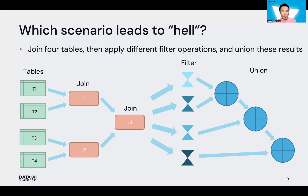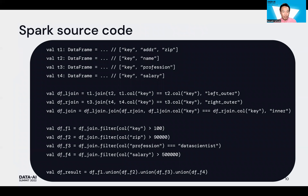We can see only three join operations in the left-hand side. Here is the Spark source code written in Scala. The first four lines read databases into data frames T1, T2, T3, T4. The next three lines perform the three join operations. The next four lines apply defined filter operations against the same join result DF join. Finally, the last line unions four results into one data frame.